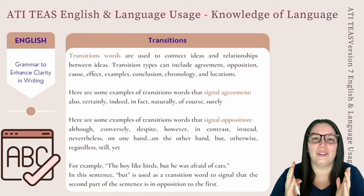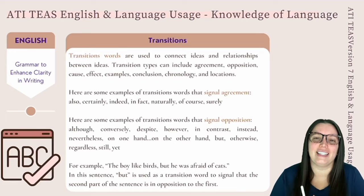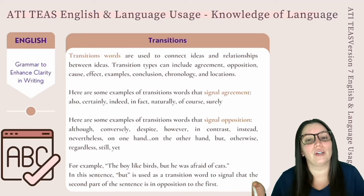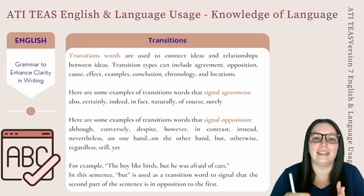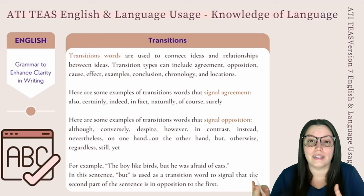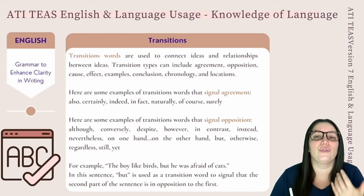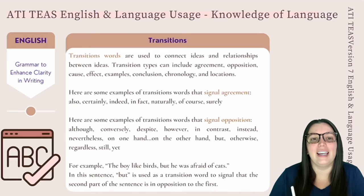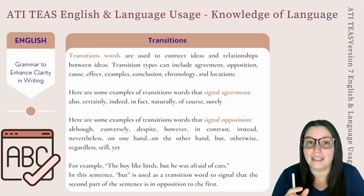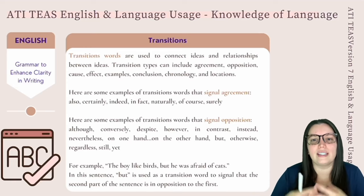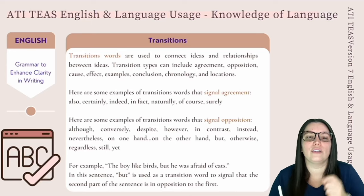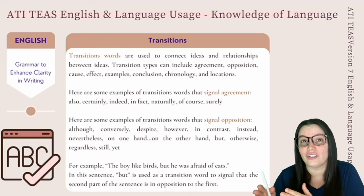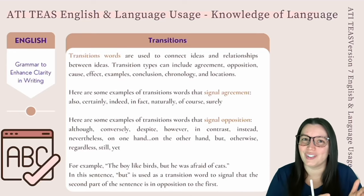You will also need to be able to identify how ideas are related to each other in the text. For example: the boy likes birds, but he was afraid of cats. In this sentence, but is used as a transition word to signal that the second part of the sentence is an opposition to the first.